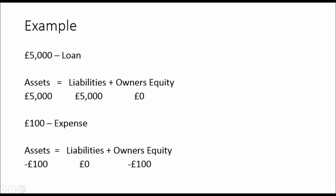Now a £100 expense. We've looked at direct things with assets and liabilities so far, but how does an expense account impact liabilities or owner's equity? If we paid a £100 expense, say an electricity bill, £100 would come out of the bank account — so assets come down by £100. That expense has an impact on the overall profitability of the business, which has an impact on owner's equity — so minus £100 owner's equity.